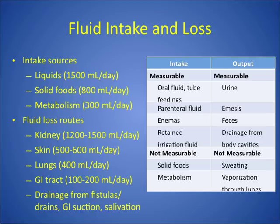Our fluid loss routes: 60% is from urine, 28% is insensible losses from our skin, lungs, and GI tract, 8% is from sweat, and 4% from feces.